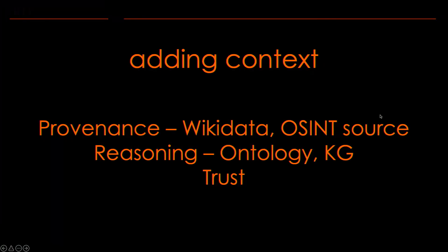Reasoning comes from knowledge graphs and ontology. We followed an ontology or taxonomy-based approach because we created knowledge graphs with certain questions in mind, and those questions can be answered if you give them a structure. Structure comes from classes, and classes can be defined in ontologies. Then there is trust — that's an area I'm still pursuing. How do you add trust to the models that are extracting data, as well as to the source of information?